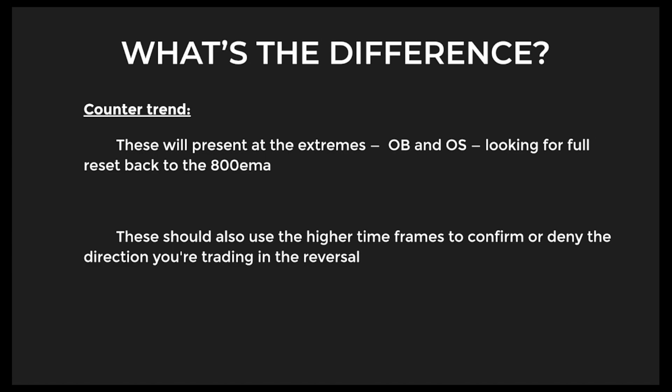D2 trades should also use higher timeframes to confirm or deny the direction you're trading for that reversal. For example, if you're looking at a downtrend and think it might be at a bottom because it's oversold, you'd want to go to the higher timeframes — the one hour, four hour, daily — and ask: are these long biased? Would it make sense to buy it off this support level? If so, that D2 reversal idea could make sense, because the higher timeframes always overpower it. But if they don't, use the higher timeframes to pull yourself back and remember: D2 trades are tougher than D1 trades, they're less probable, and you may want to turn your focus somewhere else.